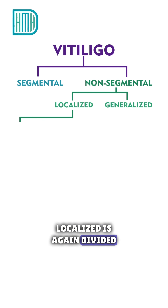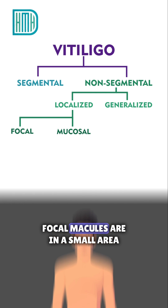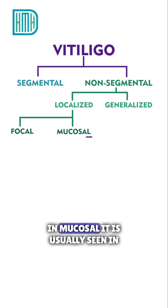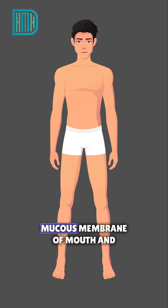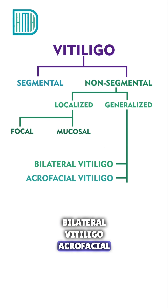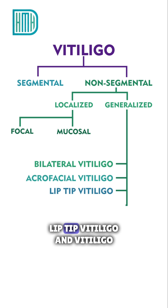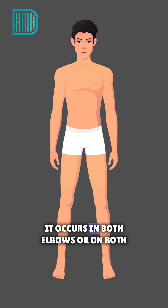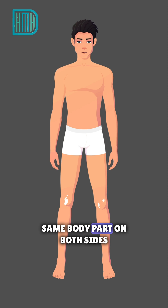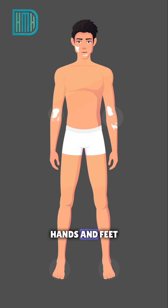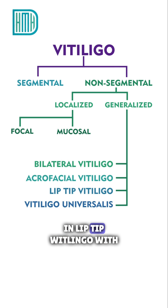Non-segmental vitiligo is divided into localized and generalized forms. Localized is further divided into focal and mucosal: in focal, macules appear in a small area and do not spread in a set pattern; in mucosal, it is usually seen in the mucous membranes of the mouth and genitals. Generalized types include bilateral vitiligo, acrofacial vitiligo, lip-tip vitiligo, and vitiligo universalis. Bilateral vitiligo occurs on both sides — for example, both elbows or both knees. Acrofacial vitiligo affects the face, hands, and feet.